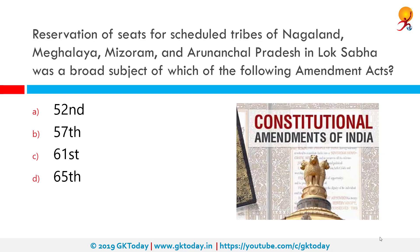Preservation of seats for scheduled tribes of Nagaland, Meghalaya, Mizoram and Arunachal Pradesh in Lok Sabha was the broad subject of which of the following amendment acts? The correct answer is the 57th Amendment Act. The 57th Amendment Act amended Article 332 in 1987 to provide reservation to scheduled tribes in Nagaland, Meghalaya, Mizoram and Arunachal Pradesh Legislative Assemblies.